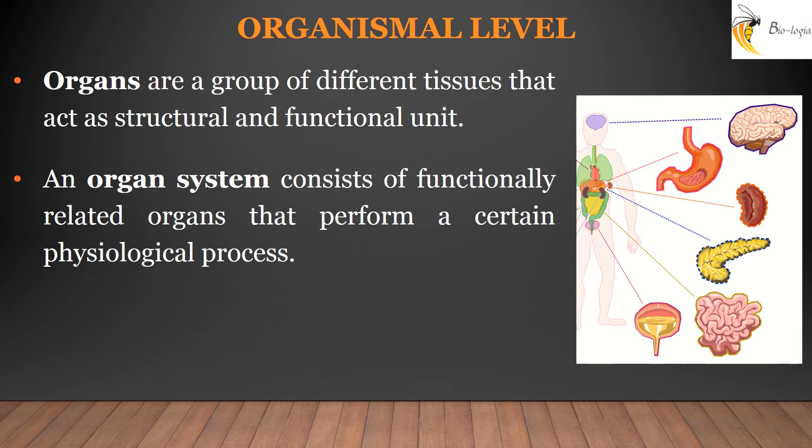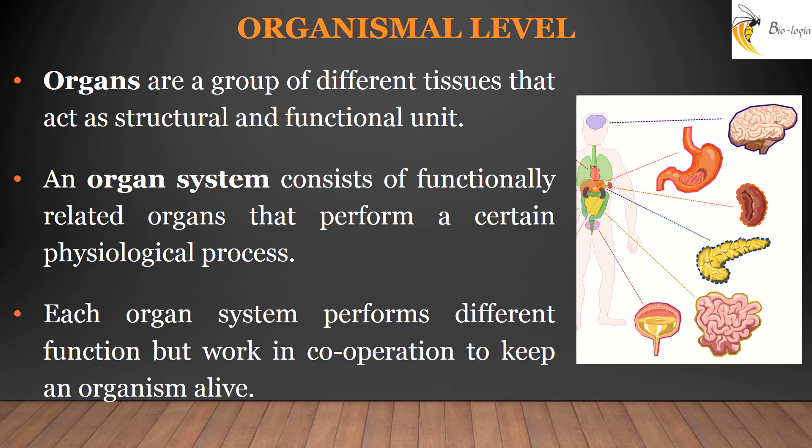When many different organs come together to perform a certain process or function, we call it an organ system. For example, the digestive, nervous, and many other systems perform different functions but work together as a unit to keep the organism alive.